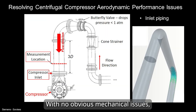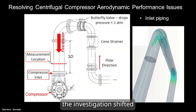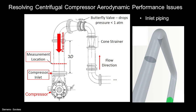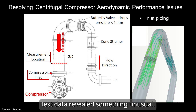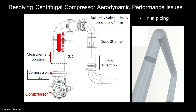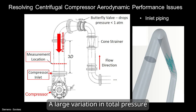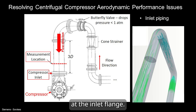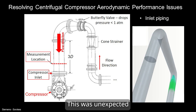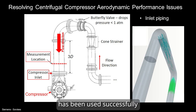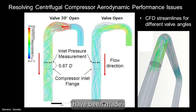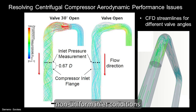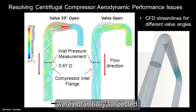With no obvious mechanical issues, the investigation shifted towards the test setup itself. Further analysis of the test data revealed something unusual: a large variation in total pressure at the inlet flange. This was unexpected, as the test loop setup had been used successfully in previous evaluations, and no significant modifications had been made, so non-uniform inlet conditions were not initially suspected.